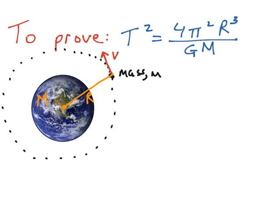In this proof we're trying to get a relationship between the time that it takes a satellite to orbit the Earth, which is called its period, which is the letter T, and the radius of its orbit — the distance of the object, like a satellite or the moon, to the centre of the Earth. We begin our proof by looking at the diagram. We have the black dot with a mass called m, which is our satellite, orbiting around the Earth. The Earth has a mass of capital M and the distance between the satellite and the centre of the Earth is capital R.